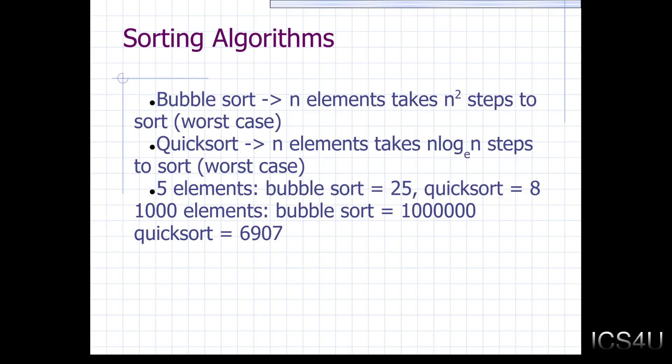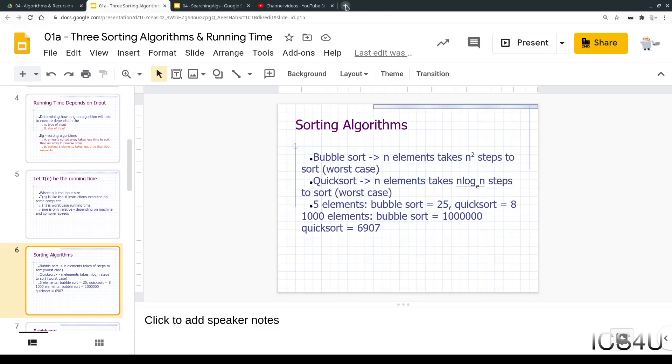But with 1,000 elements to sort, take a look at the difference here. All of a sudden, bubble sort balloons out, no pun intended, I guess pun intended, to a million steps. And quick sort only requires just under 7,000. So quick sort, the more values you have, the more important which sorting algorithm you use. And it is true, Python and some other languages have built-in sorting algorithms. I don't know if Python, you can actually select which sorting algorithm you use. Maybe you can. Let's just take a look here. I'm kind of curious.